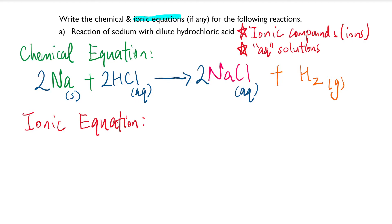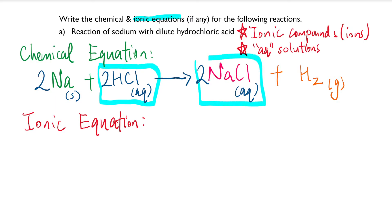So here, sodium is not AQ — it's a solid, so it's going to remain the same. But something is going to happen to HCl because it's AQ. And NaCl is AQ, so something is going to happen to it too. Hydrogen gas will remain the same.